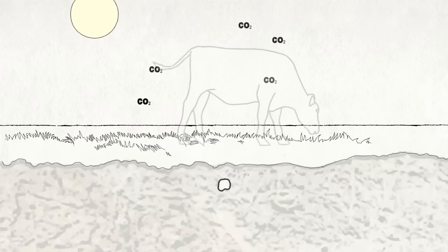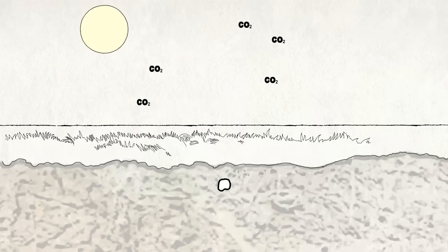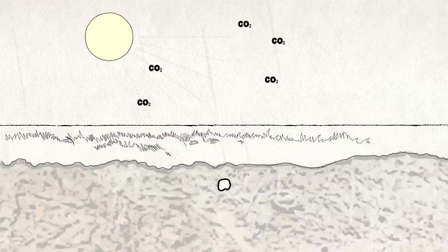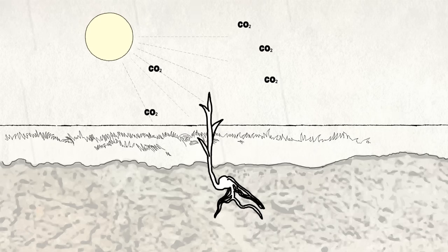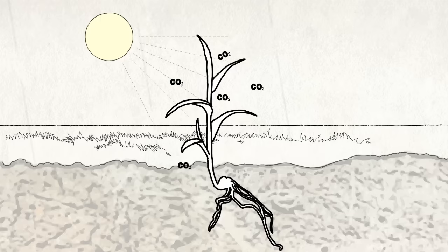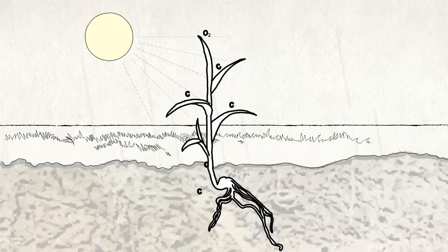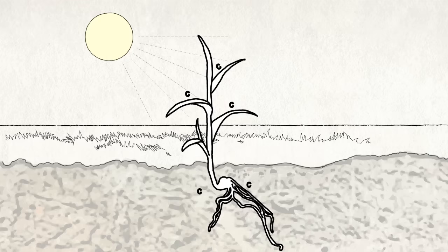Specifically, they argue that by carefully managing the way animals graze the land, plants can be stimulated to grow more vigorously, taking more carbon dioxide out of the atmosphere via photosynthesis, leading to more carbon being stored in their shoots and especially in and around their roots.